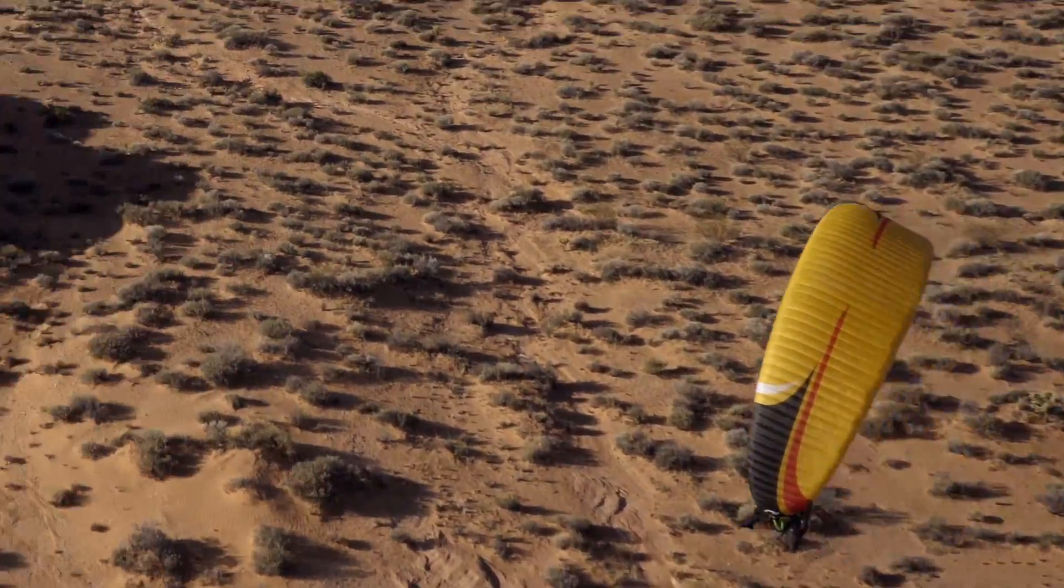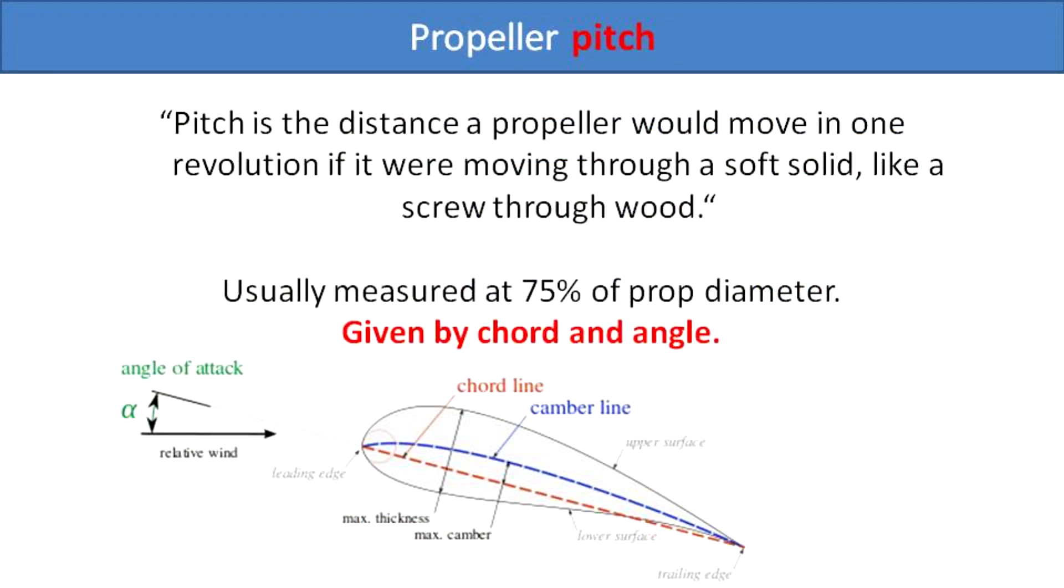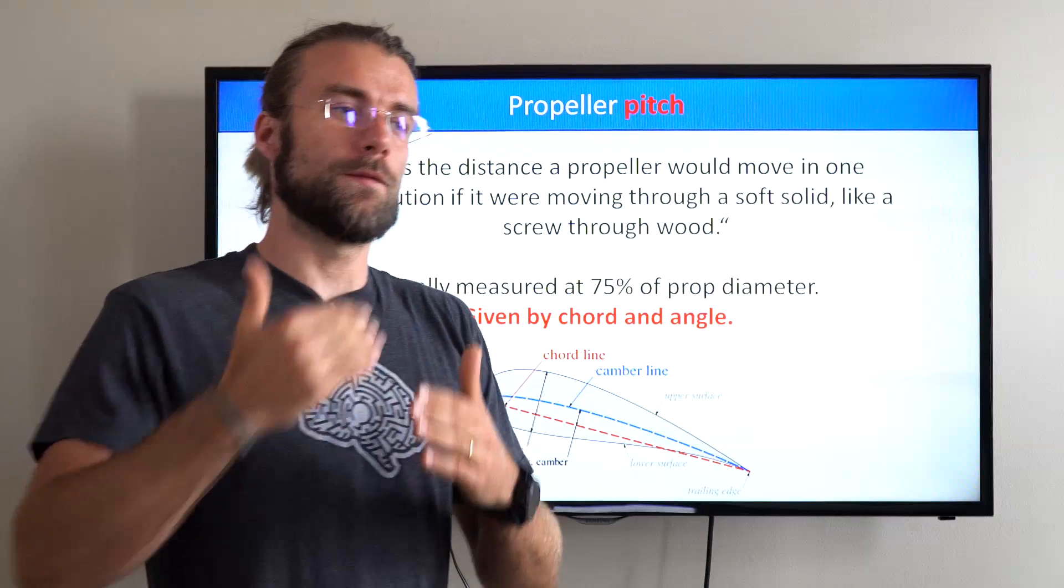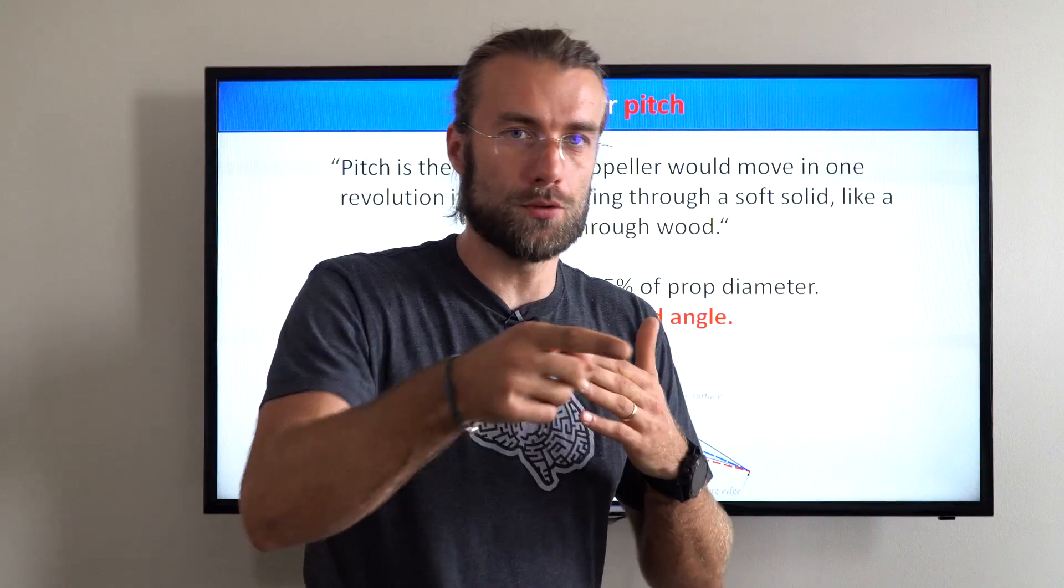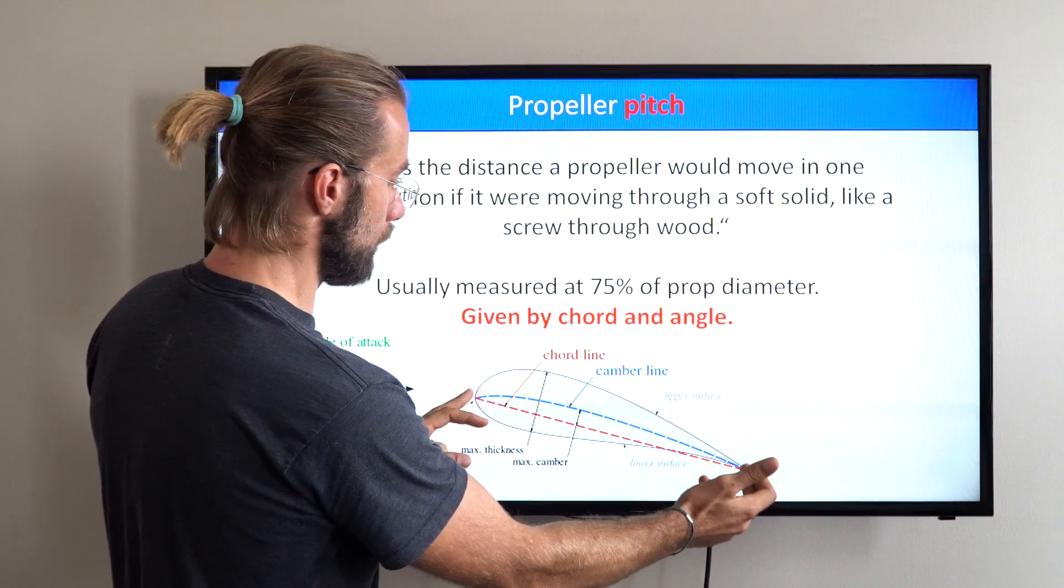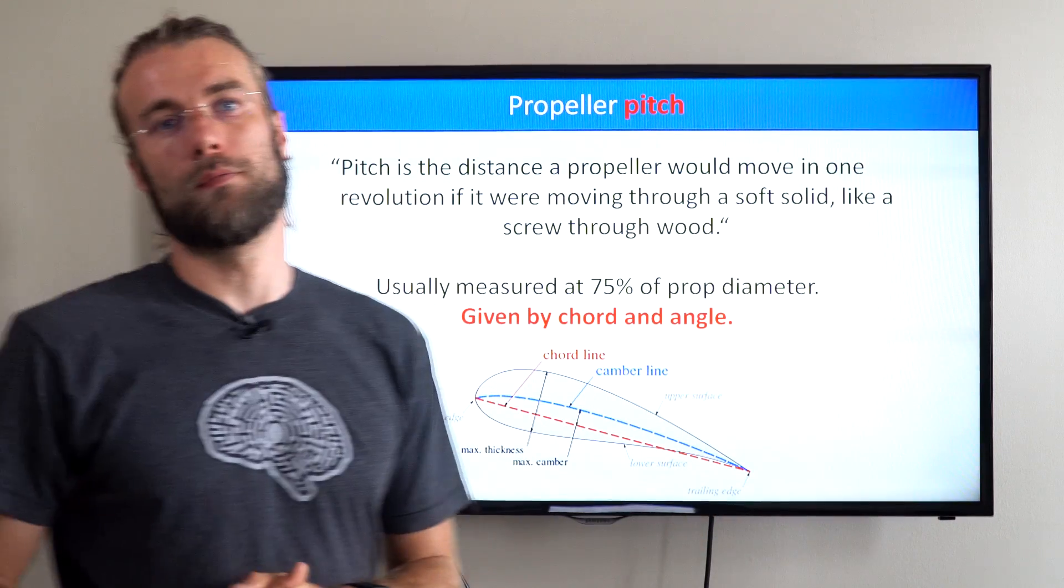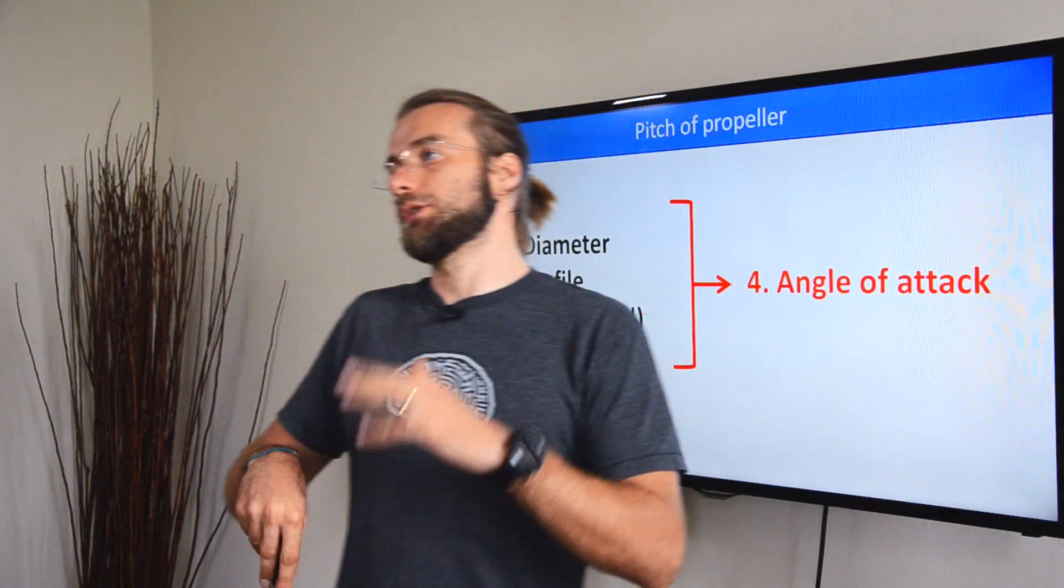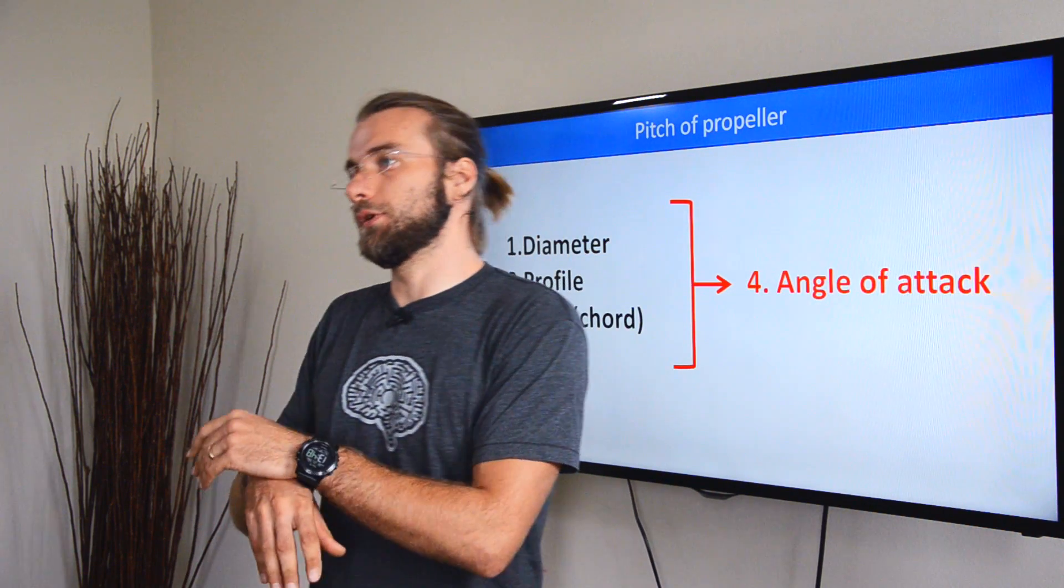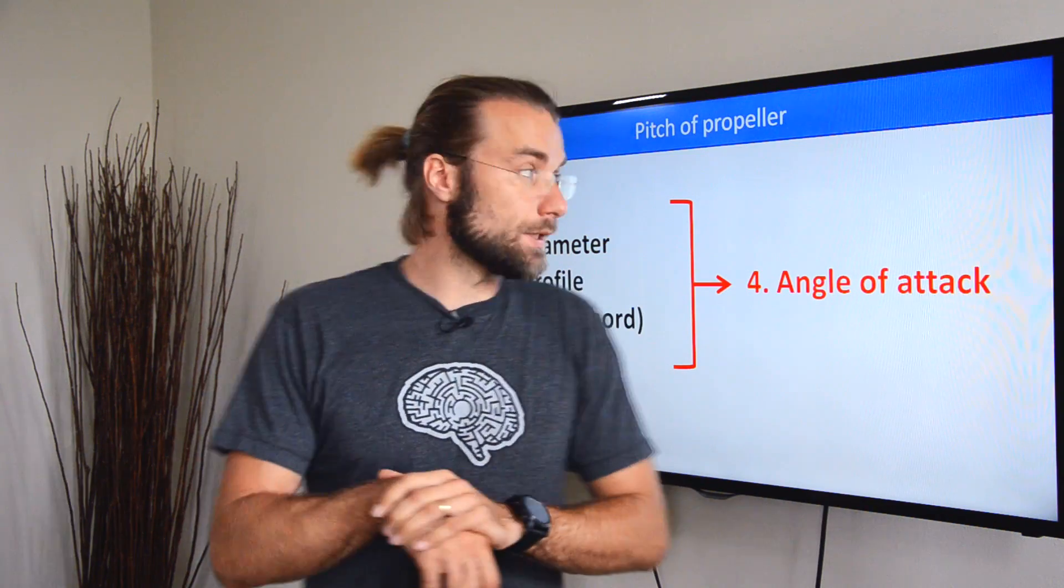The last consideration is the pitch of the propeller. The propeller pitch is the distance that a prop would travel forward in one revolution if it would cut the air perfectly. It's given by the cord line, the length of the cord line, and the angle of the propeller. Currently, we are designing a new prop for the Vittorazi Moster engine, and we already made a few decisions.